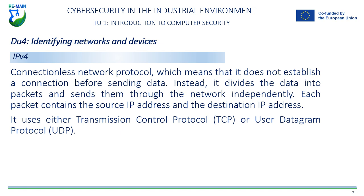IPv4 is a connectionless network protocol, meaning it does not establish a connection before sending data. Instead, it splits the data into packets and sends them across the network independently. Each packet contains the source IP address and the destination IP address, as well as other information needed to route the packet across the network. To ensure that packets are delivered correctly, IPv4 uses either the Transmission Control Protocol (TCP) or the User Datagram Protocol (UDP). TCP is a connection-oriented protocol that ensures packets are delivered in order and without errors, while UDP is a connectionless protocol that is faster but does not guarantee packet delivery.